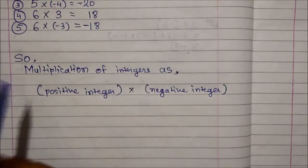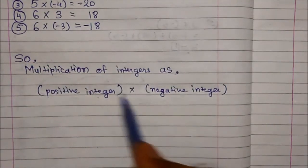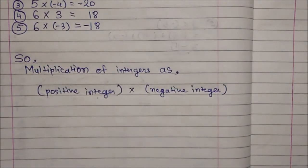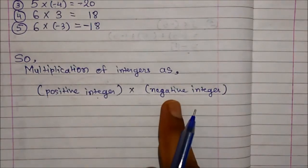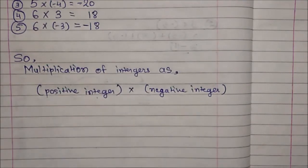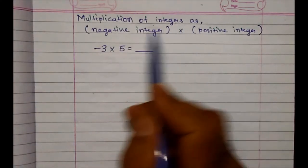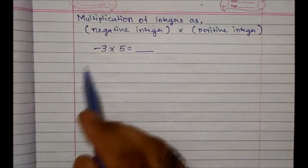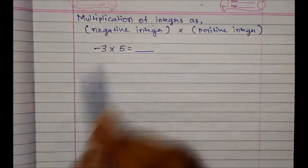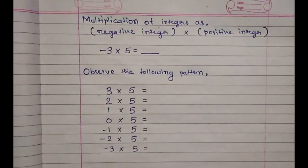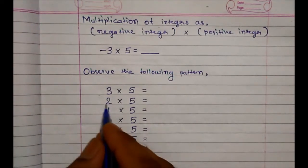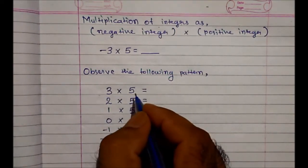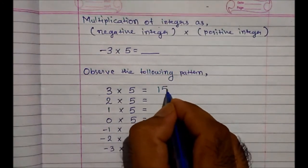So far we have multiplied a positive integer with a negative integer. Now let's do the inverse — multiplying a negative integer with a positive integer. We have the example: minus 3 into 5. Let's observe a pattern starting with 3 into 5, which equals 15.